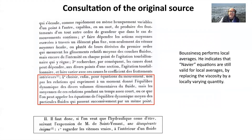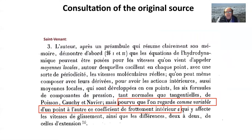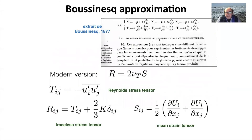Boussinesq says he more or less solved this enigma of turbulence. In Savernier's introduction, the same idea is expressed: if the viscosity coefficient is considered as variable, then averaging the Navier-Stokes equations gives the same form. In Boussinesq's work, we can already find a tensorial equation. In modern notation, if we consider τ_ij the Reynolds stress tensor and r_ij the traceless stress tensor — obtained by subtracting the diagonal — then the Boussinesq relation is a proportionality between the traceless stress r and the mean strain s.